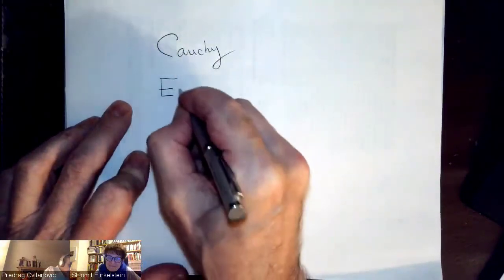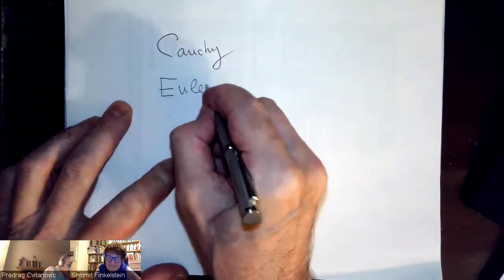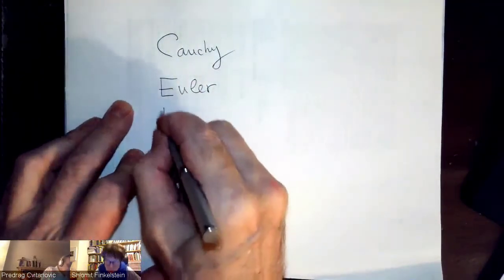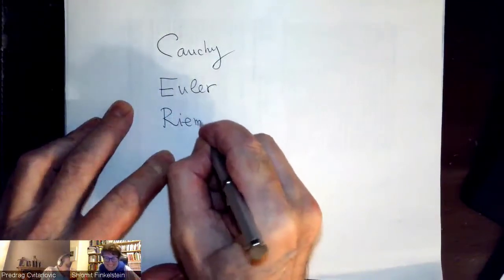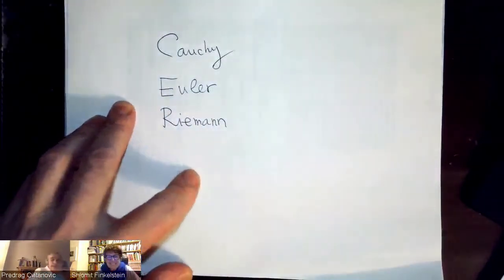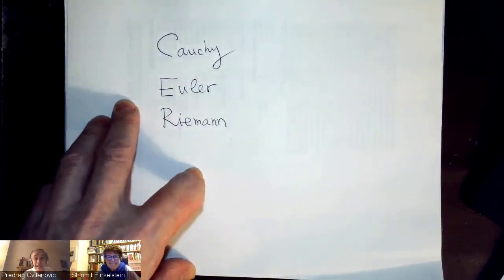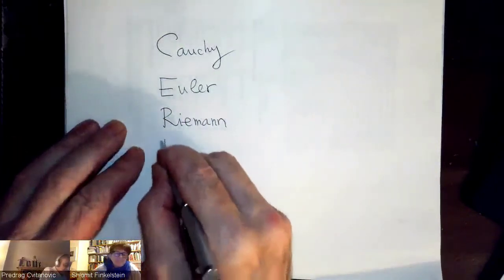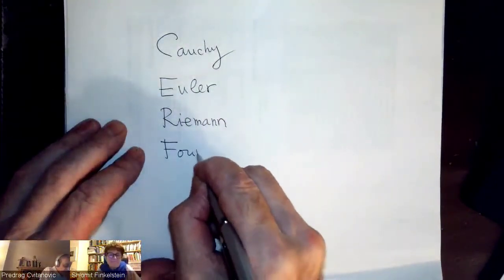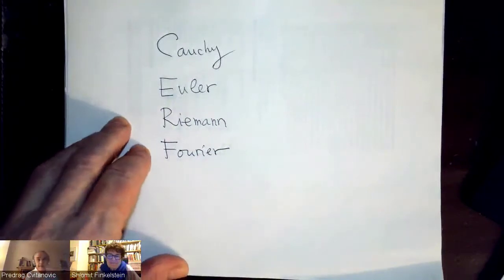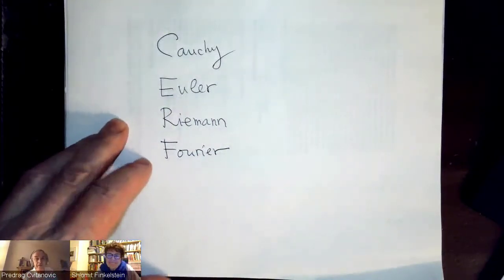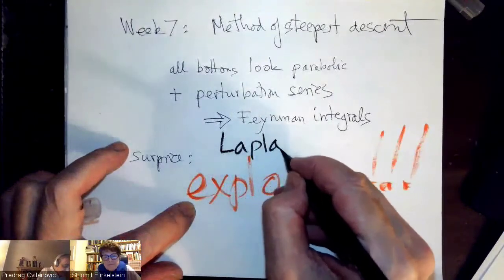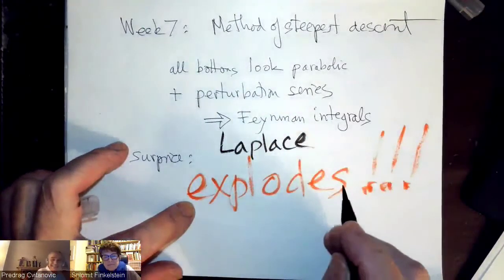This German, his name is Euler. This German, he's called Riemann, because it's German. This guy, his name is Fourier, because he's French. Laplace, another Frenchman, pronounced Laplace.